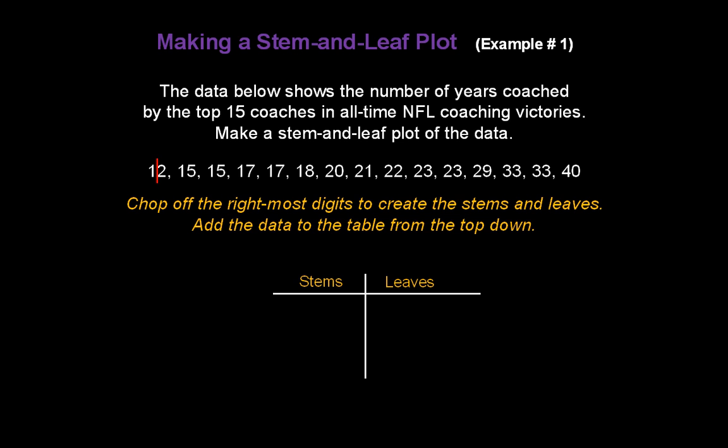So let's take a look at number 12. We're going to slice it right down the middle between the 1 and the 2. Put the 1 in the stem and the 2 in the leaf. Now the next number is 15. We already have the stem of 1 in there, so when we split it up, all we have to do is put the 5 in the leaves. Same thing with the next 15. We already have the stem of 1, so another 5 goes in the leaves.